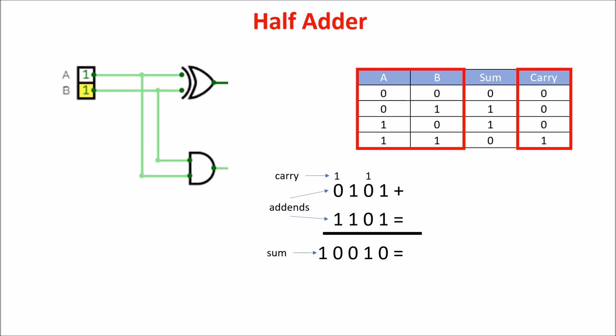But in a binary sum of two numbers, we usually need to sum three bits: two bits from the numbers plus the previous carry.